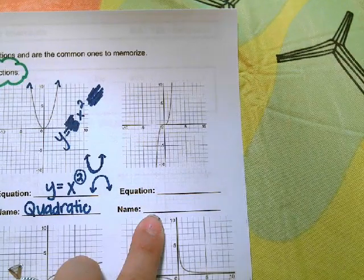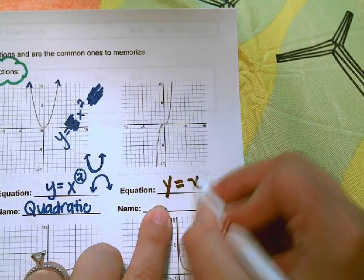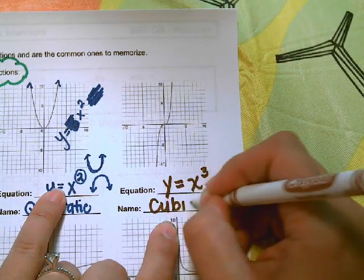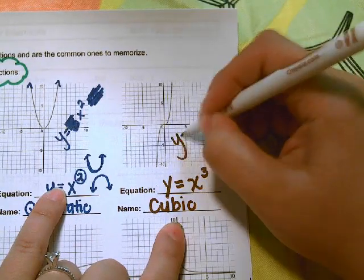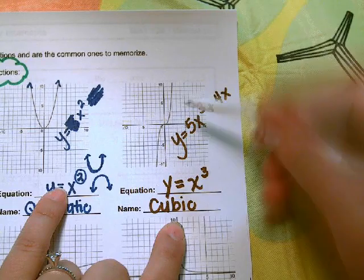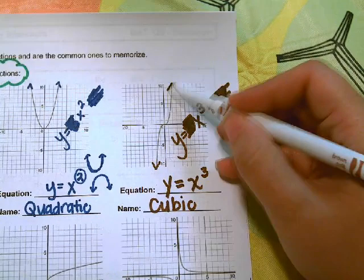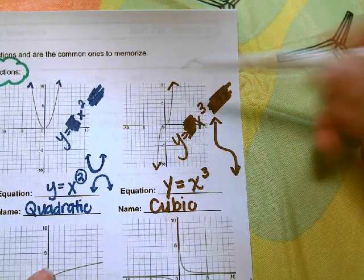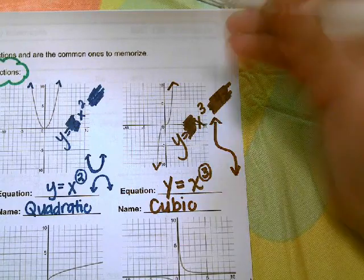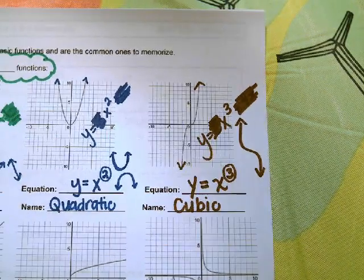Next, we have this graph here. This shape will occur whenever the highest exponent in the equation is a 3, so it looks like y equals x cubed. We call this a cubic function. The equation could have other things in it, but the parent function is simple: y equals x cubed. The graph could go the other way, but whenever the highest exponent is 3, it makes this shape. I call this the Travolta graph — just like John Travolta points his finger up and down when he dances.